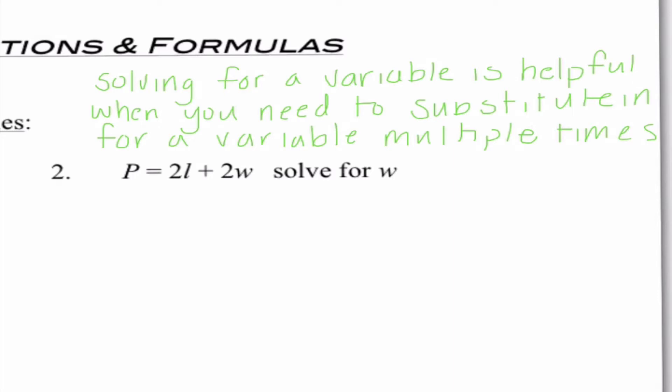Some of you may be wondering why would we ever use this other than when we're trying to get an equation into slope intercept form. And the reason why this can be very helpful comes up in problem number 2. Here we have our formula for finding the perimeter of a rectangle. So the perimeter equals 2L plus 2W. And here it's telling us to solve for W. Now the reason why this would be helpful is because if we needed to substitute in for a variable multiple times, it can save us a lot of time and effort.